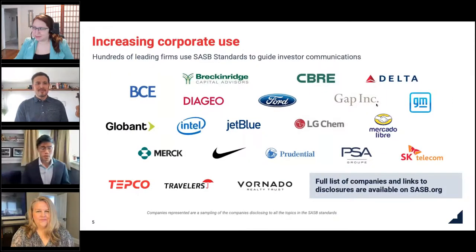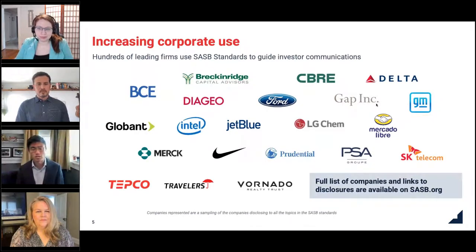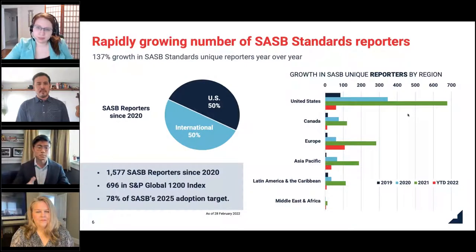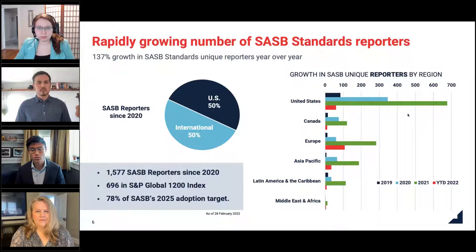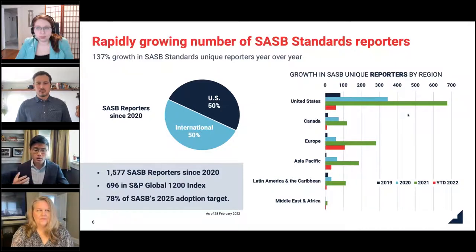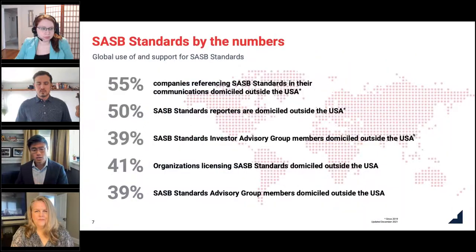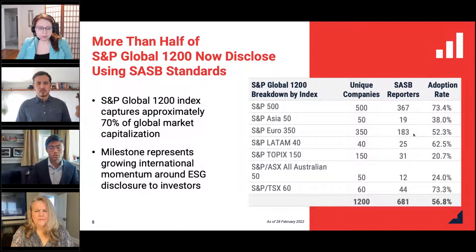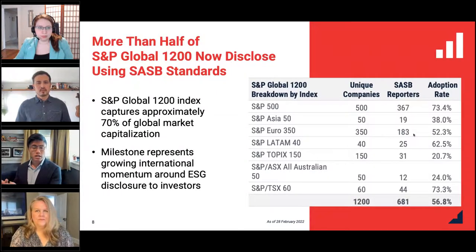Apologies for that. So to this point of corporate adoption, many leading firms are now utilizing the SASB standards to guide their investor communications. You'll see significant brands here — Ford, Delta, Gap, LG, Travelers, Nike, and so on. But really across the globe, we're seeing a significant uptick in corporate adoption and utilization of the SASB standards, particularly in the past two years from 2020 to 2021 and into 2022. We're expecting another significant uptick in growth. Notably, more than half the S&P Global 1200 index now reports to the SASB standards. Here's a breakdown of that index region by region across significant markets so you can get a sense of how companies across the globe are being drawn to the SASB standards for communication to investors on managing their ESG performance.